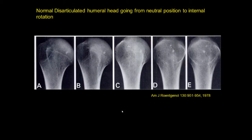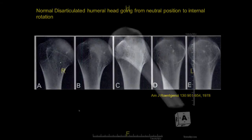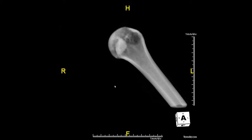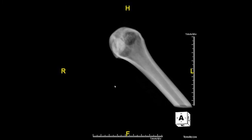From that classic article, they used a disarticulated humerus to show the appearance going from neutral position to internal rotation, demonstrating that in a normal case the trough sign would not be present. We'll use a 3D image to illustrate a similar appearance. In this patient with the fracture, where there really should be relative lucency, you have that trough line denoting the edge of the fracture. As we rotate the image, you can picture where that line and that sclerotic area will appear on each of the rotation views.